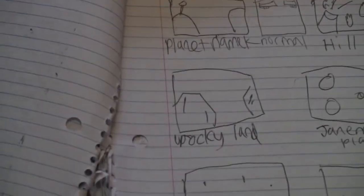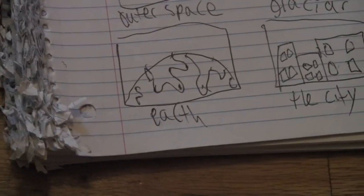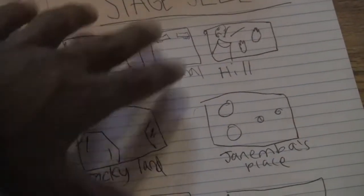There's Planet Namek, Rocky Land, Outer Space, Earth. Then you have the city, Glacier, Janimba's Place, and Hill. And then there's the normal stadium.